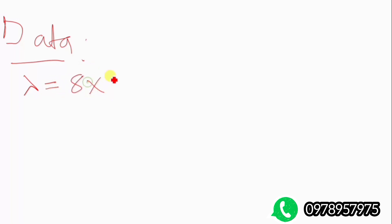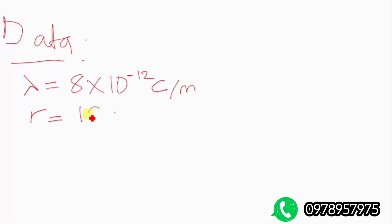We can start with our data and see what we have. We have our charge density lambda, which is equal to 8 times 10 to the power negative 12 coulombs per meter. Our proton is at a distance r, where r initial is equal to 9.0 centimeters. The final r is what we want to find.